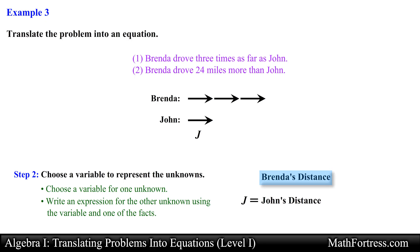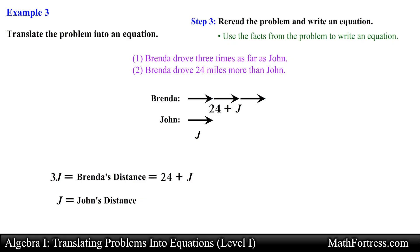Now an expression for Brenda's distance is going to depend on the sentence that we use. The first sentence says that Brenda's distance is 3 times as far as John. This translates to 3j or 3 times j. On the other hand if we use the second sentence we have that Brenda's distance is 24 more than John's distance. This translates to 24 plus j. Notice that in this example we have two variable expressions that represent Brenda's distance. Now the last step is to translate these expressions into an equation. Because both sentences relate Brenda's distance with that of John's it only makes sense that these two expressions are equivalent to each other. So we set both expressions equal to each other as follows: 3j equals 24 plus j.